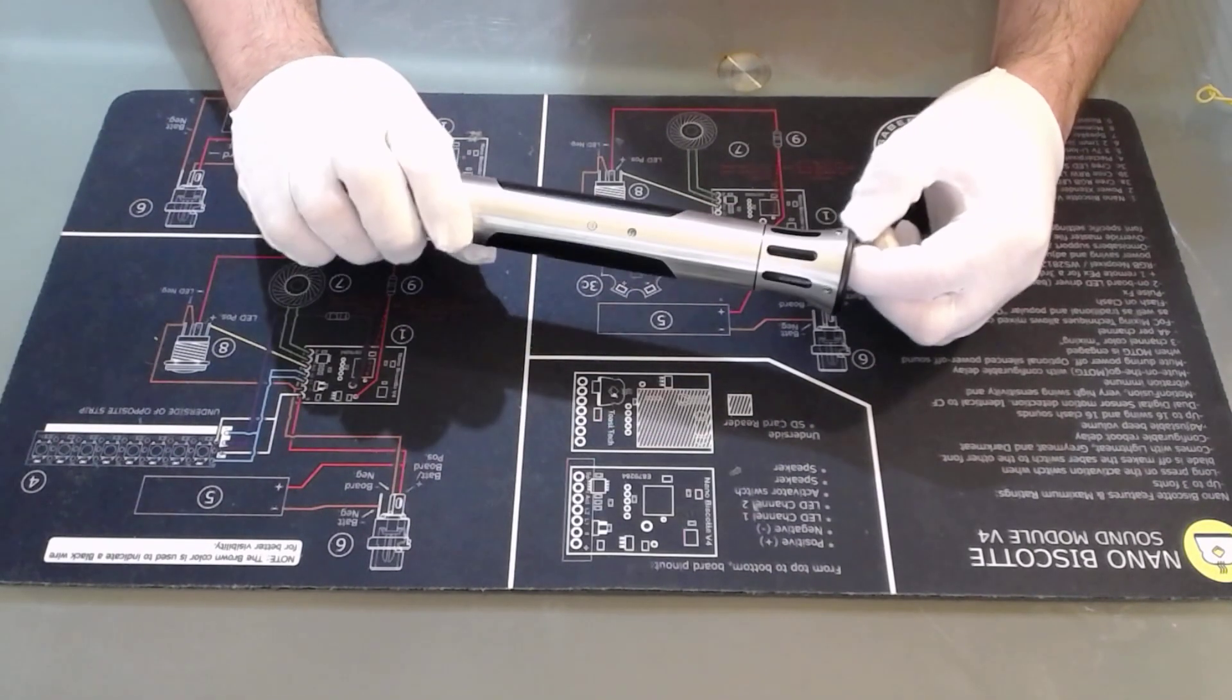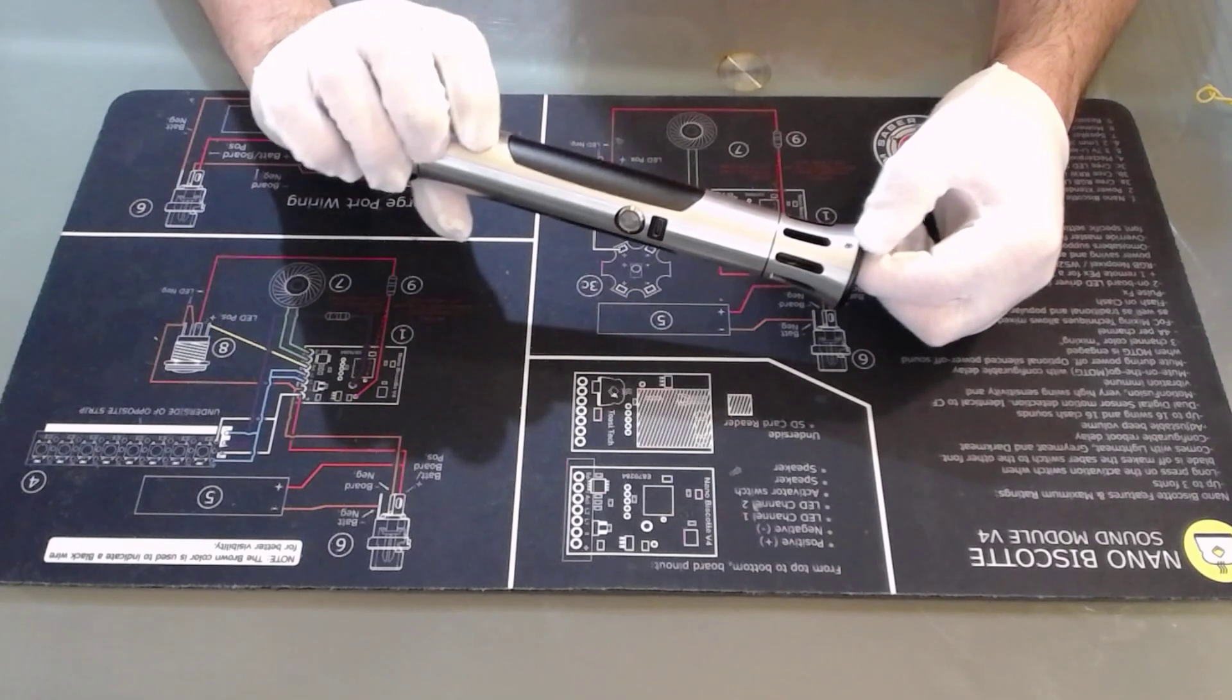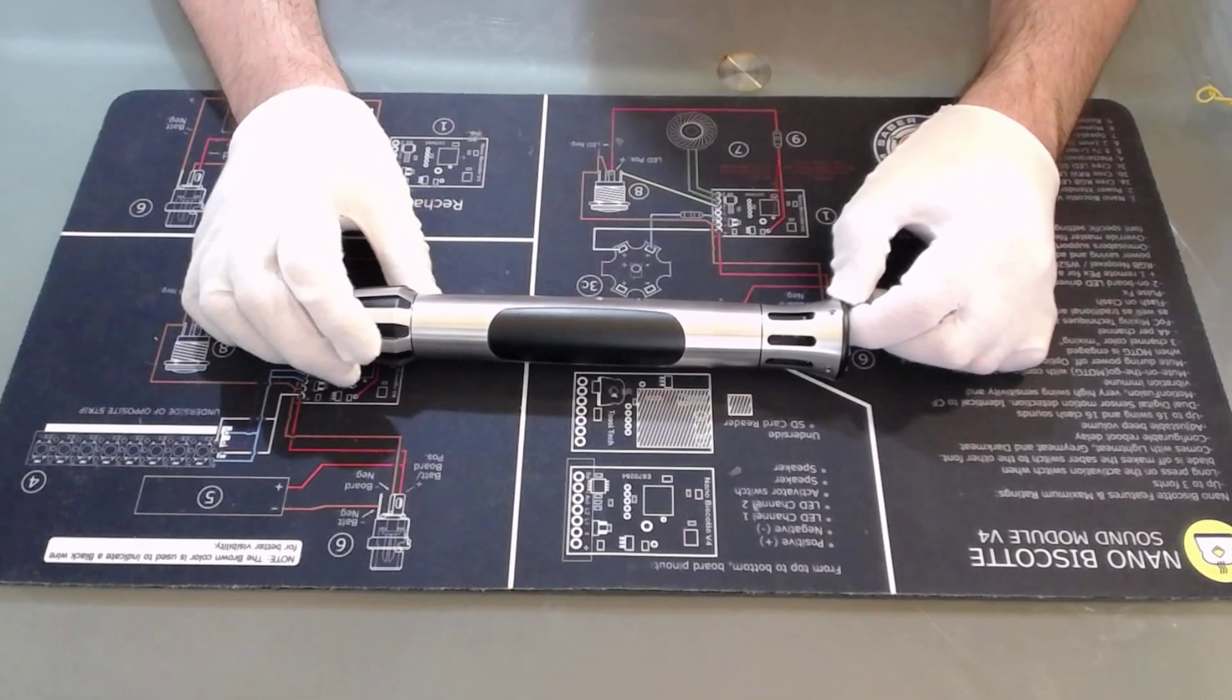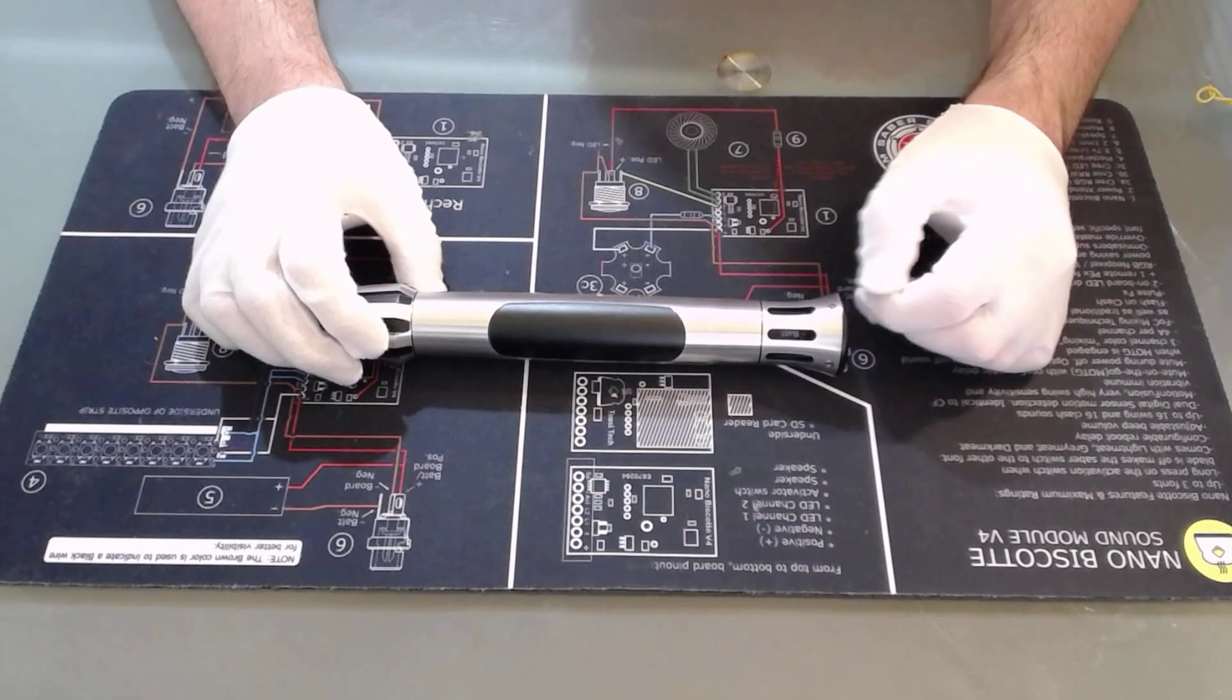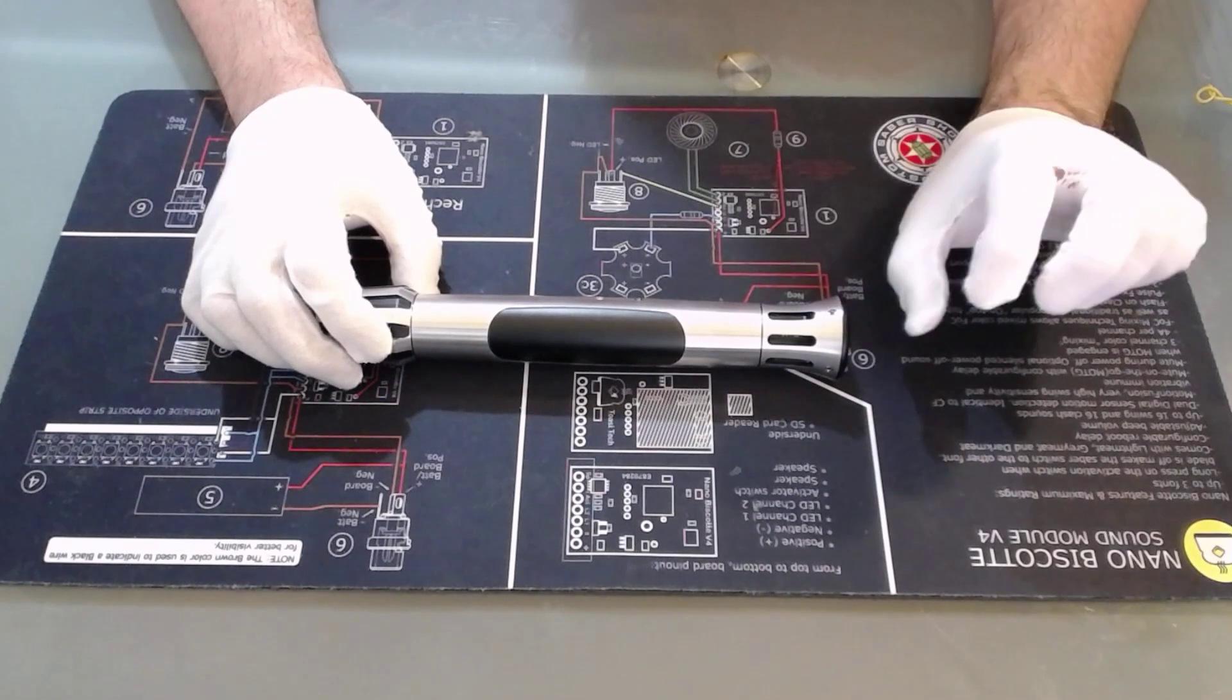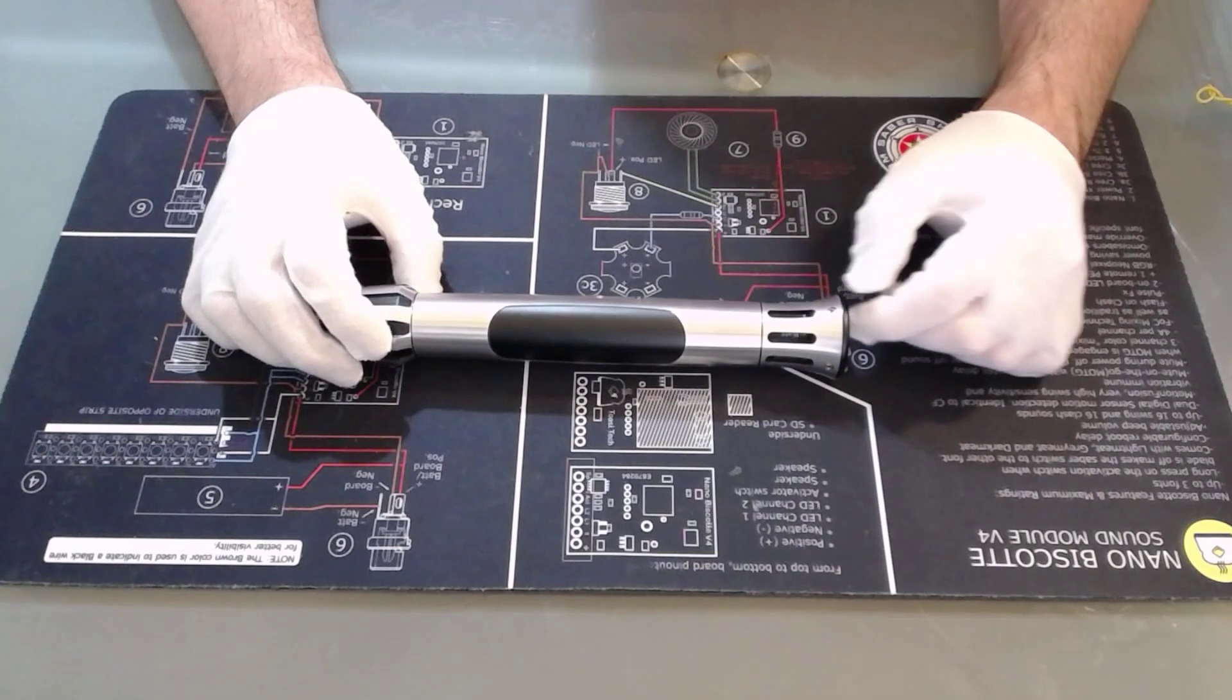We have three retention holes for the blades. Now if you've got a heavy grade blade in the saber, you only need to use one retention screw, which is this one here, because heavy grade blades are quite thick, so they're very stiff.